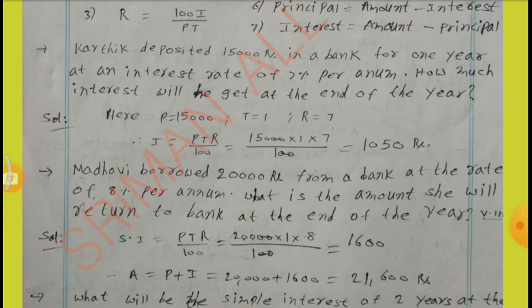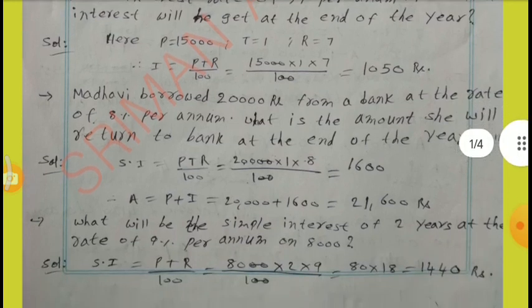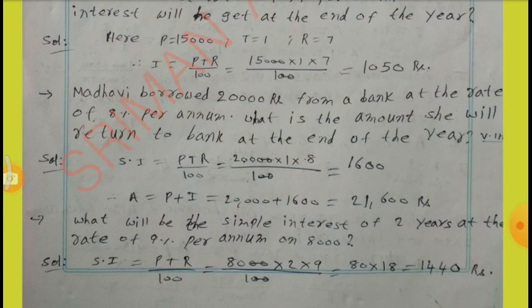Madhavi borrowed Rs.20,000 from a bank at the rate of 8% per annum. What is the amount she will return to the bank at the end of the year? Solution: I equal to PTR by 100. Here, P equal to 20,000, T equal to one year, R equal to 8%. By substituting these values, we get I equal to Rs.1,600. Therefore, A equal to P plus I: 20,000 plus 1,600 equal to Rs.21,600.